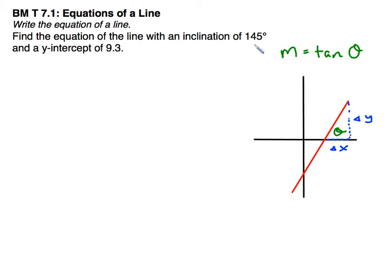Here we have 145 degrees, so in order to find the slope, I need to first find the tangent of 145. So tangent of 145 is negative 0.70, and there's our slope.